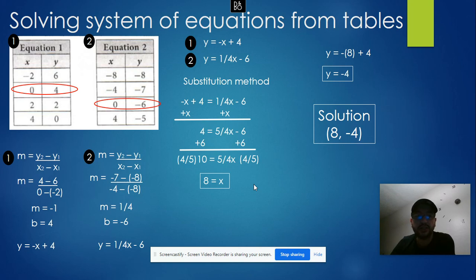That's how you solve a system when you have two tables. First, you have to find the equation of each table. Then use any of the methods—graphing, substitution, or elimination—to find the solution.